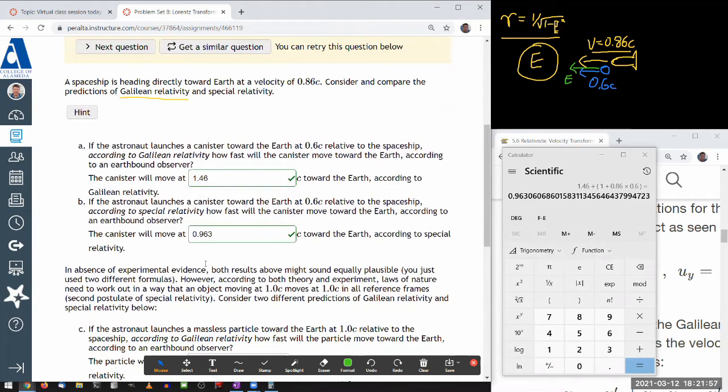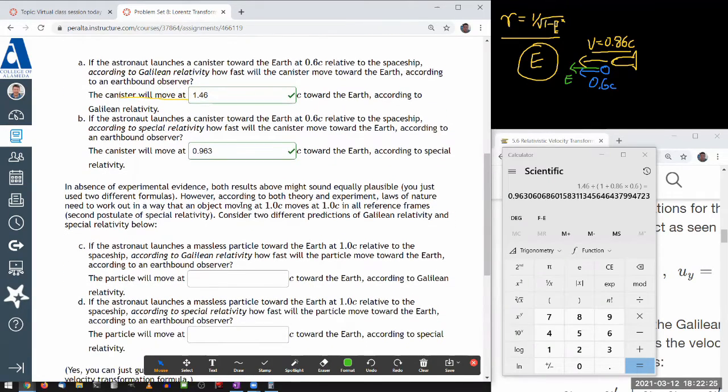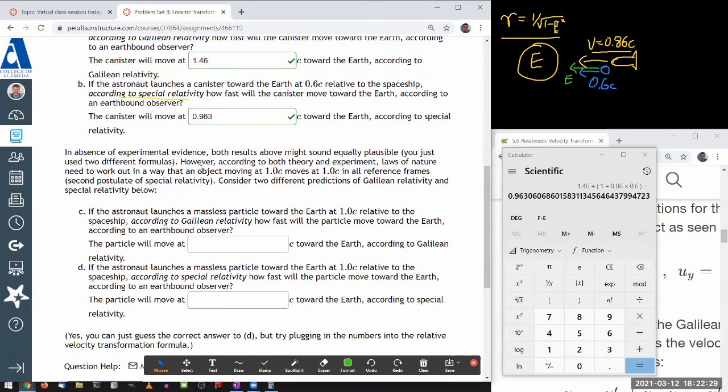So this is a quick comparison of the different predictions of the Newtonian mechanics, which uses Galilean relativity versus the special relativity, which holds faster to the postulate that speed of light is constant in all reference frames. That's our starting point. When things contradict each other, we hold on to the second postulate of special relativity. So both results might sound equally plausible. You just use two different formulas. However, according to both the theory and experiment, laws of nature need to work out in such a way that object moving at 1c, moves at 1c in all reference frames. So this is what I was basing it on.